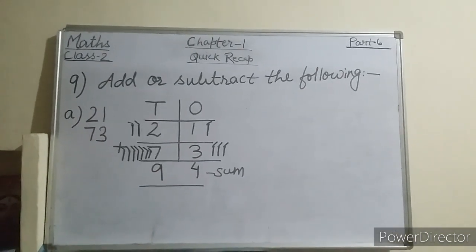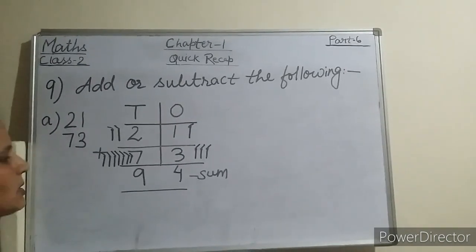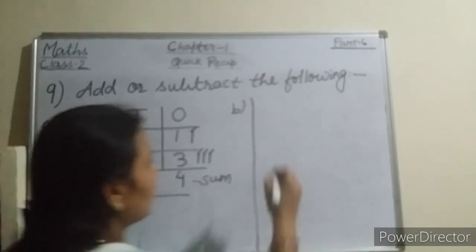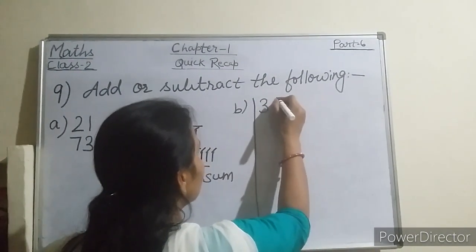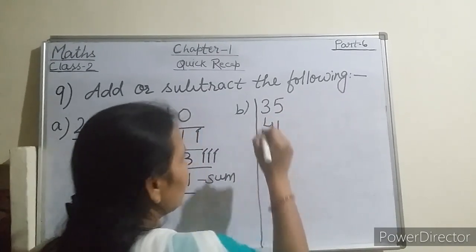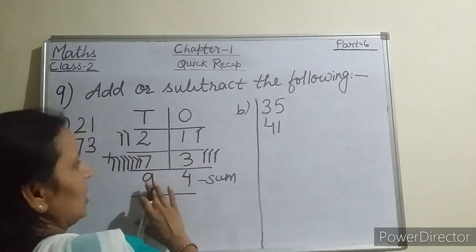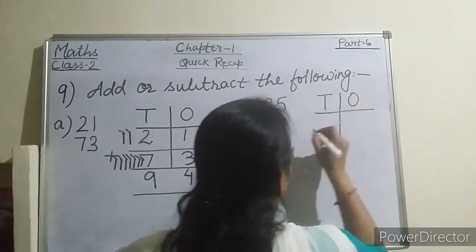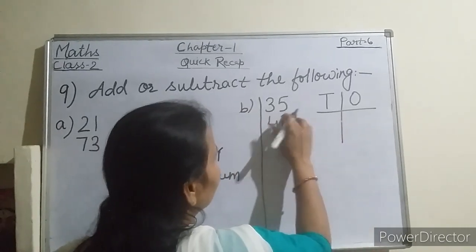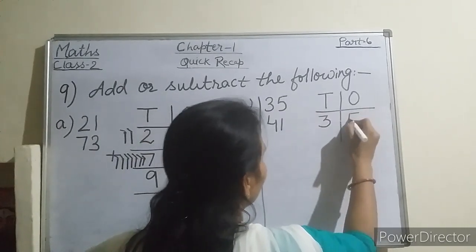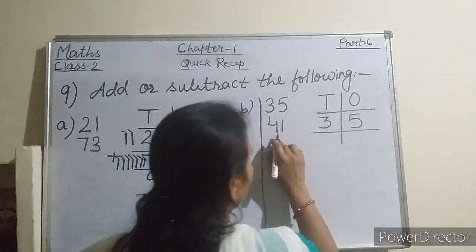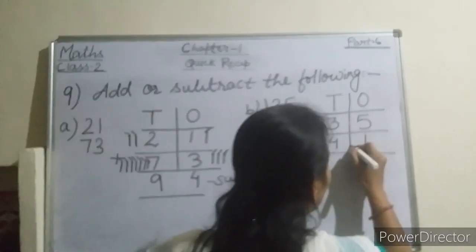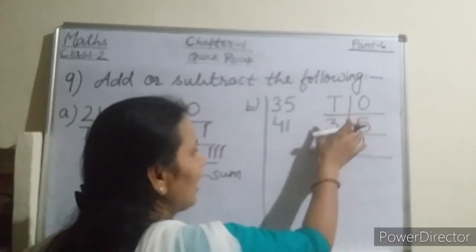One more sum I am giving you to do. The second one is 35 plus 41. Again, we will arrange like this only. Here we will write T for tens and O for ones. For 35, that is 3 tens and 5 ones. And 41 means 4 tens and 1 one. We have to add these numbers.